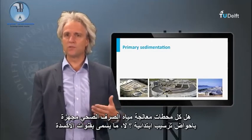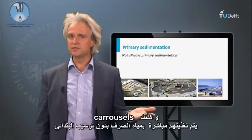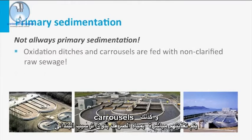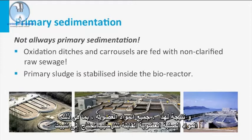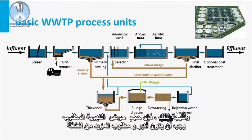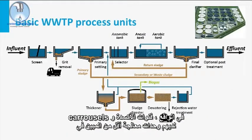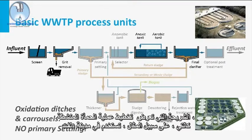Are all sewage treatment plants equipped with a primary settler? No. The so-called oxidation ditches and carousels are directly fed with non-settled sewage. As a result, all organic material, including the settleable organic solids, need to be stabilized in the aeration tank. And as a consequence, the required volume of aeration tanks needs to be bigger and more energy is required. In fact, oxidation ditches and carousels have fewer process units than the schematized activated sludge process, which is used in, for instance, the city of Delft.